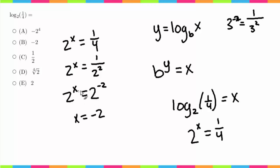And then from there you just have to remember: 2 to the x, if you have the same base, the exponents must be equal for the quantities to be equal. So that means x must equal negative 2. So that is answer choice B.